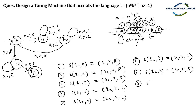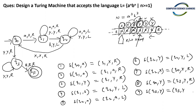δ(Q0, Y) = (Q3, Y, R) — at Q0 reading Y, go to Q3, write Y, move right. δ(Q3, Y) = (Q3, Y, R) — at Q3 reading Y, stay at Q3, write Y, move right. δ(Q3, B[blank]) = (QF, B[blank], R) — at Q3 reading blank space, go to final state QF, keep blank as-is, and move right or left (direction doesn't matter once in accepting state).